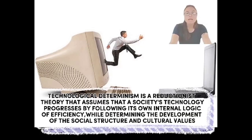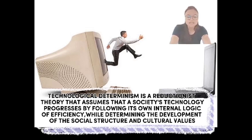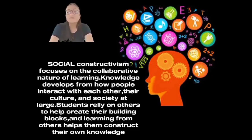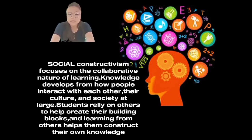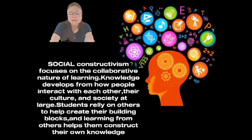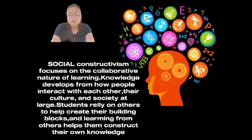Good morning everyone! We will talk about technological determinism. Technological determinism is a reductionist theory that assumes that a society's technological progress, by following its own internal logic of efficiency, will determine the development of social structures and cultural values. Next, we will talk about social constructivism. Social constructivism focuses on the collaborative nature of learning — knowledge develops from how people interact with each other, their cultures, and society at large. Students rely on others to help create their building blocks, and learning from others helps them construct their own knowledge and reality.